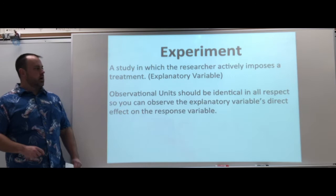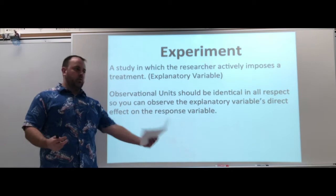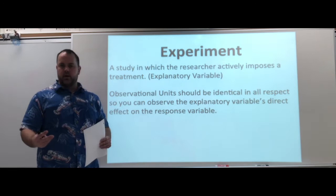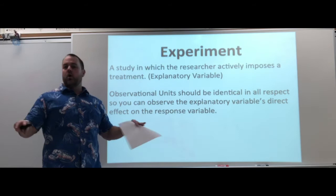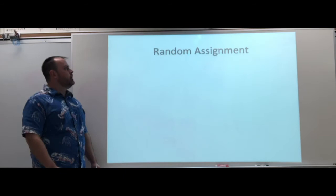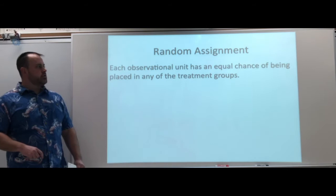Observational units should be identical in all respects so we can observe the explanatory variable's direct effect on the response variable. We don't want one very athletic student compared to one non-athletic student — that's not a fair comparison from the beginning. This is where randomness comes into play. We want all types of observational units in all of our treatment groups, and we want a sample — a group — so we can compare over and over again. Randomness is going to control bias when picking who receives which treatment, so each observational unit has to have an equal chance of being placed into one of the treatment groups.